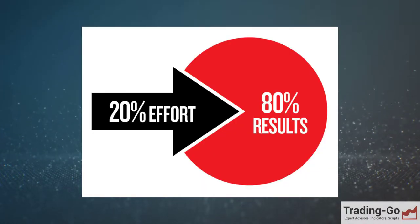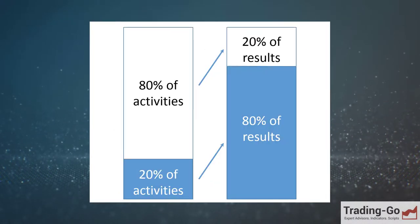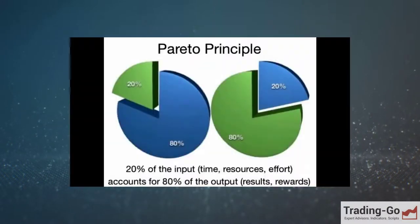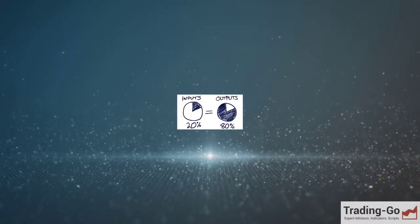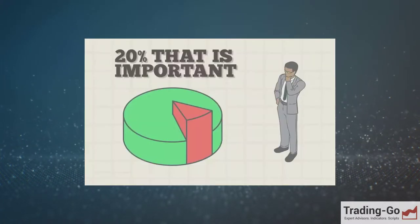Pareto Principle, also known as the 80-20 rule, states that 20% of the effort produces 80% of the result and 80% of the effort produces only 20% of the result. The principle allows for an assessment of what resources and how should be used to ensure the best performance.